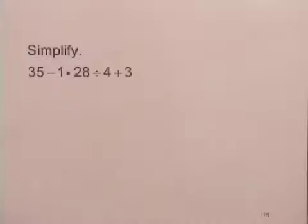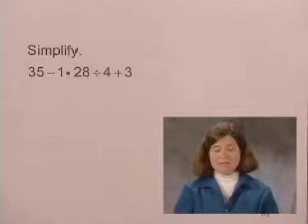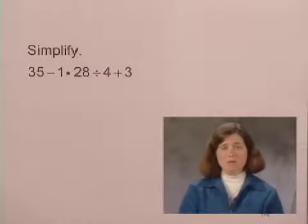For this exercise, we'll use the rules for order of operations to simplify an expression. We'll simplify the expression 35 minus 1 times 28 divided by 4 plus 3.